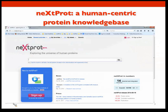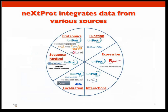NeXtProt is a human-centric protein knowledge base that aims to capture as much information as we can on human proteins. It's a resource that complements the UniProt resources, for which the SwissProt group at SIB is a member of the consortium. In NeXtProt, the different protein pages are organized into different views describing function, expression, interactions, localization, sequence, and proteomic data relevant to each entry. Our main data source is UniProt, but we also integrate data from different sources in each of those areas.